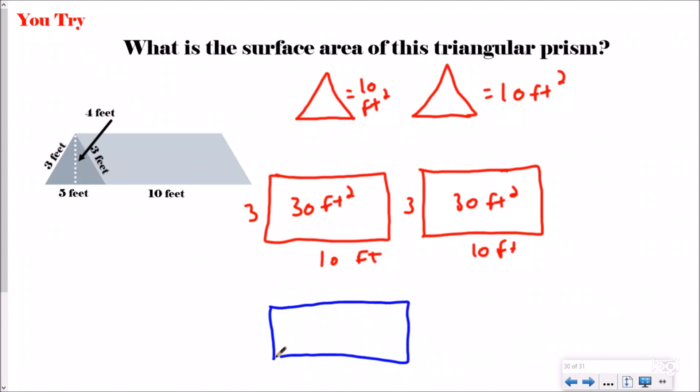I see that the width of the base is still going to be 10, but the length of the base is going to be 5. So my area for the base should be 50 feet squared. When I add all those together, that'll be 20 plus 60 plus 50, and your answer should have been, your surface area should be 130 feet squared.